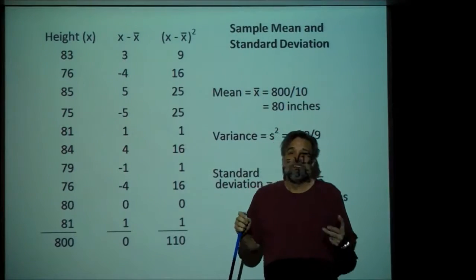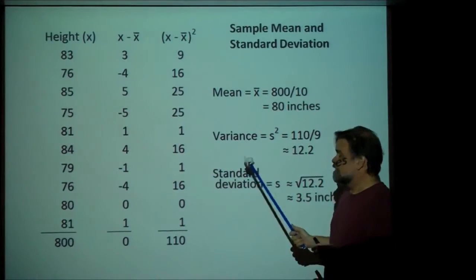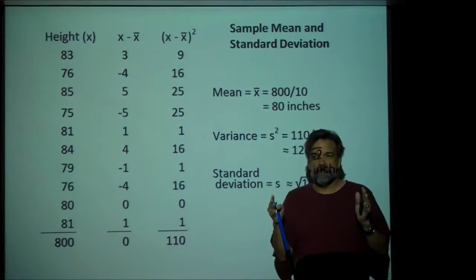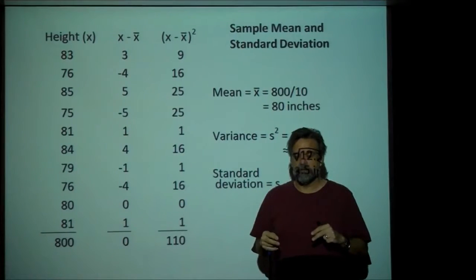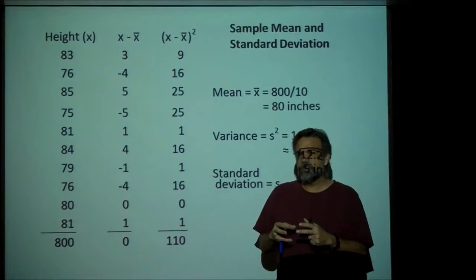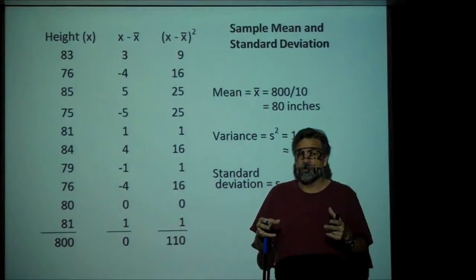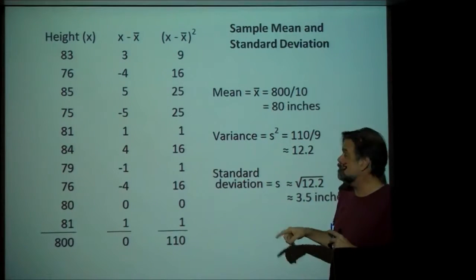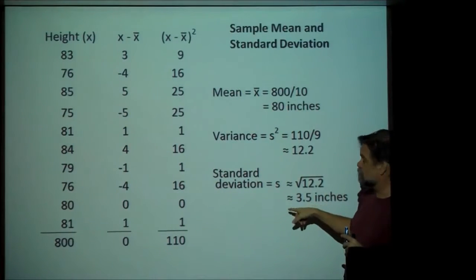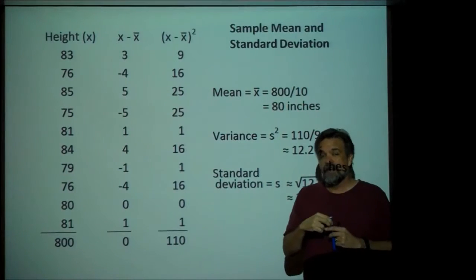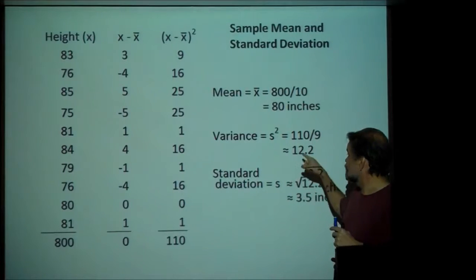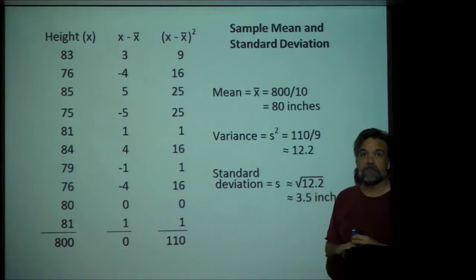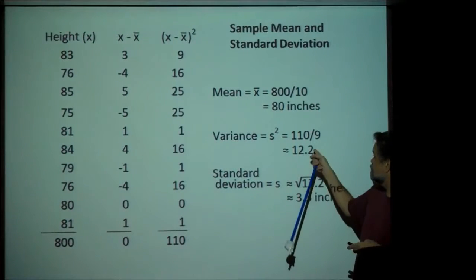Now, you might be wondering why. Well, there's actually a good reason. Remember, variance and standard deviation measure the variability of the data. Imagine I have this population with all this variety in it. Now I take a little sample — there's also going to be some variety in that sample, but probably not quite as great as the variety in the population. So we make an adjustment: instead of dividing by ten, we divide by nine, and it gives us a slightly bigger number. Last time this was eleven, now it's twelve point two. Last time this was about three point three, now it's three point five. If you work out the mathematics, amazingly enough, this becomes a very good estimate — what's called an unbiased estimate of the population variance and the population standard deviation.